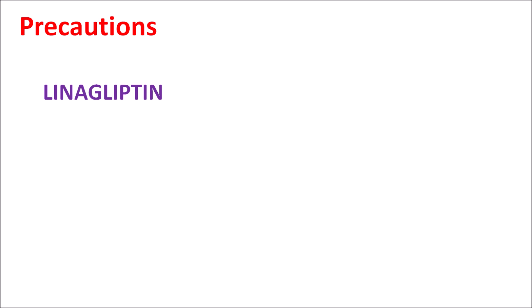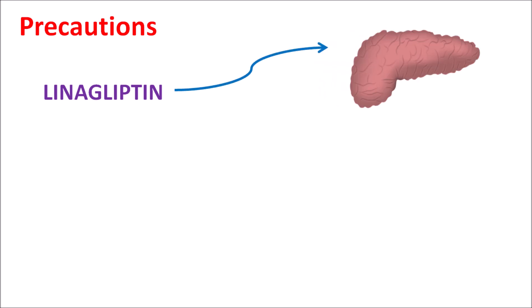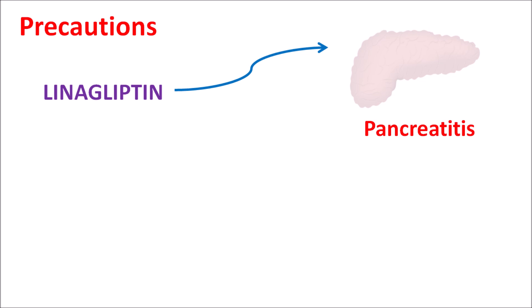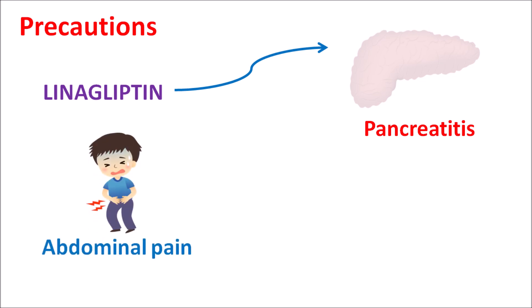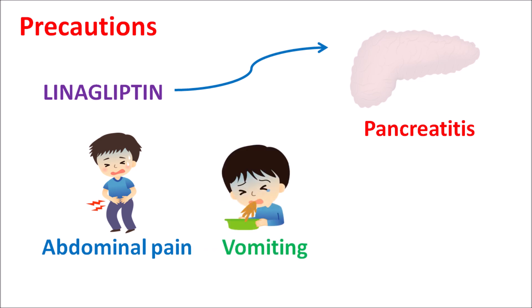Another important precaution is that linagliptin can act on the pancreas and develop pancreatitis — inflammation of the pancreas — as an important side effect. This is a common side effect observed with DPP4 inhibitors like linagliptin. Any symptoms indicating the development of pancreatitis should be thoroughly checked, such as severe abdominal pain, nausea, and vomiting. In such conditions, linagliptin should be carefully used.